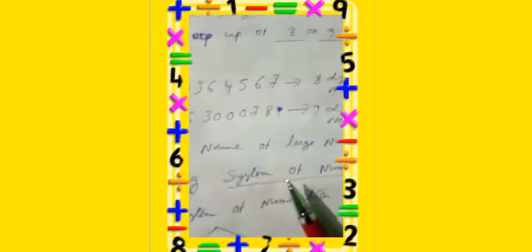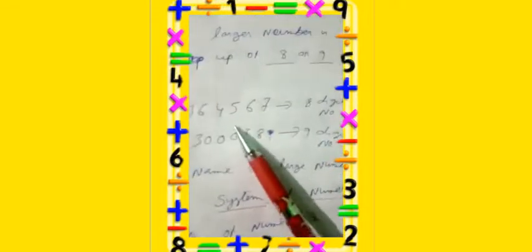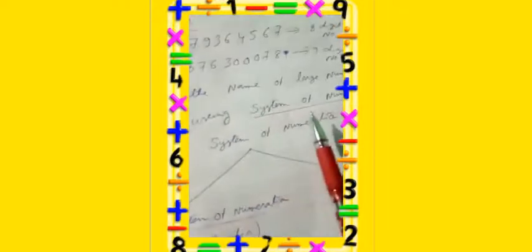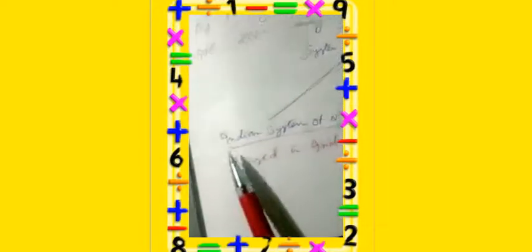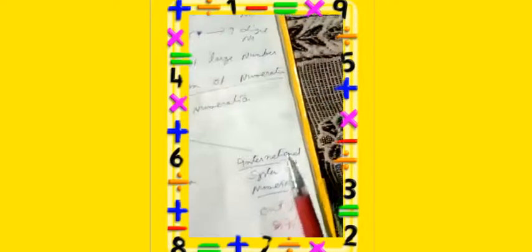So the system of numeration is for putting the name of the digit. There are two ways: one is the Indian place value chart or Indian system of numeration, used in India; and the other is the international system of numeration or international place value chart, used outside India.